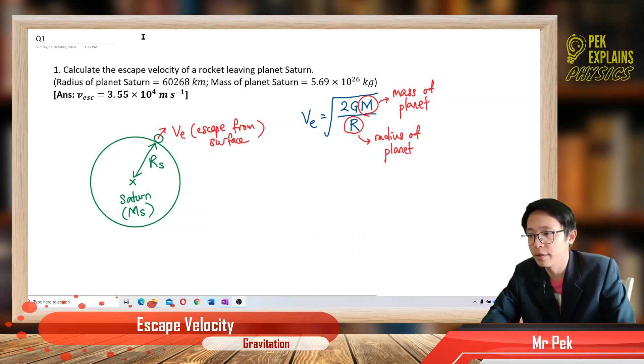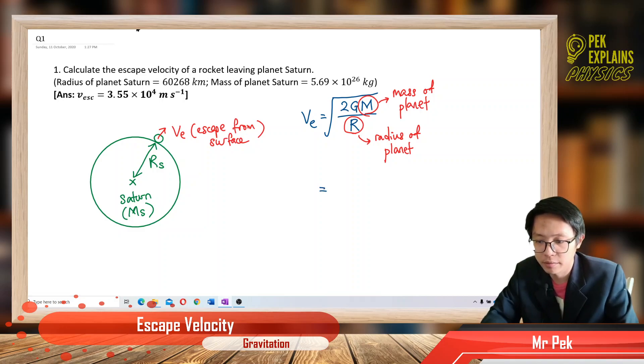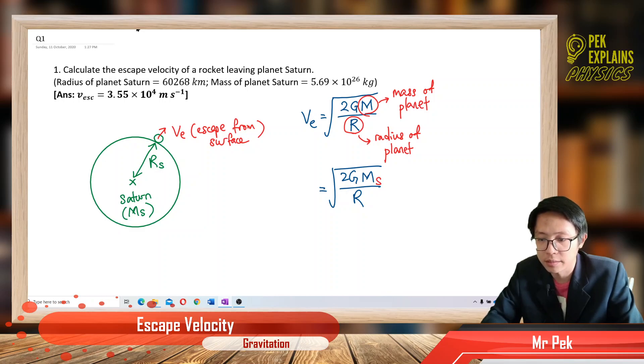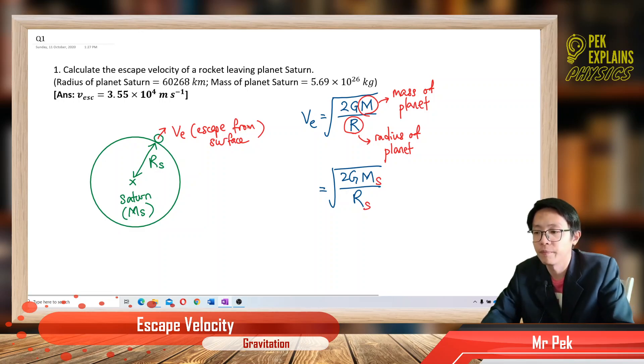Right, so we have already all the information given. We have the radius of planet and mass of planet, we just substitute all the information. So remember I just want to write back. This is the mass of Saturn and this is the radius of the Saturn itself.